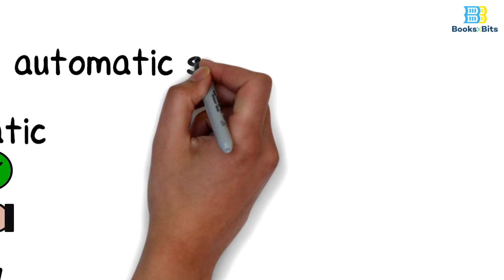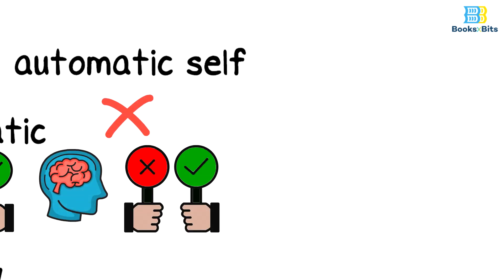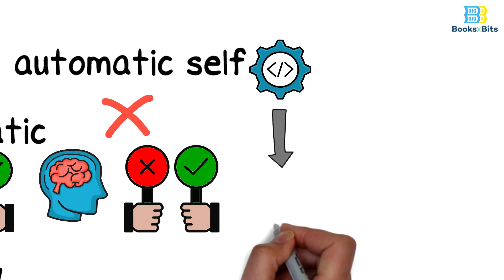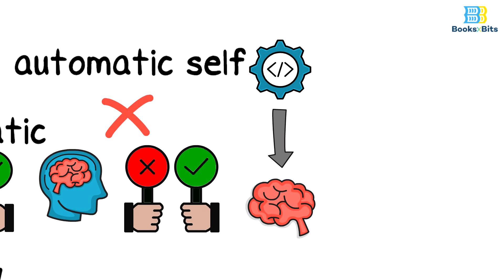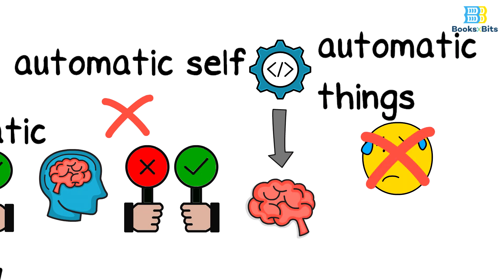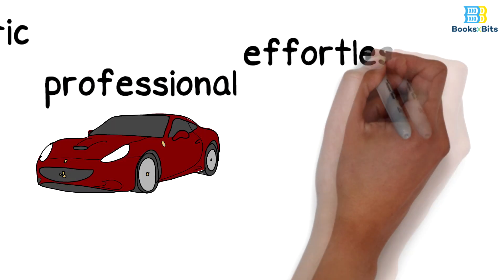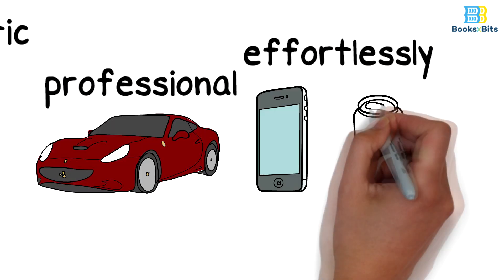As for the automatic self, it makes immediate response without the need to think or make decisions, as if they were programming codes that were previously placed in the mind to push the body to do automatic things without exhausting the mind with planning or thinking, like someone who has become a professional driver so that he drives the car effortlessly while talking on the phone or having a drink.